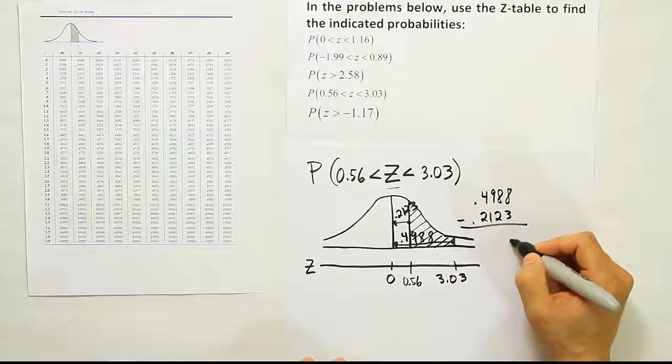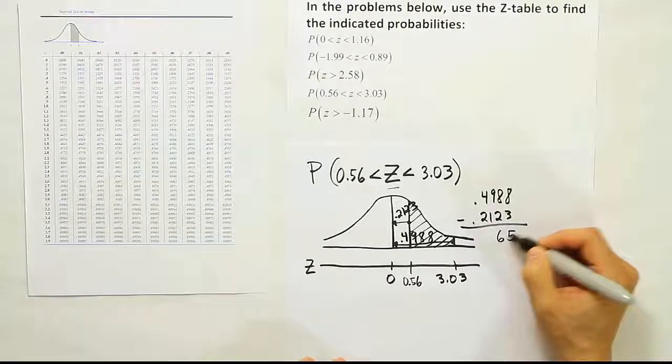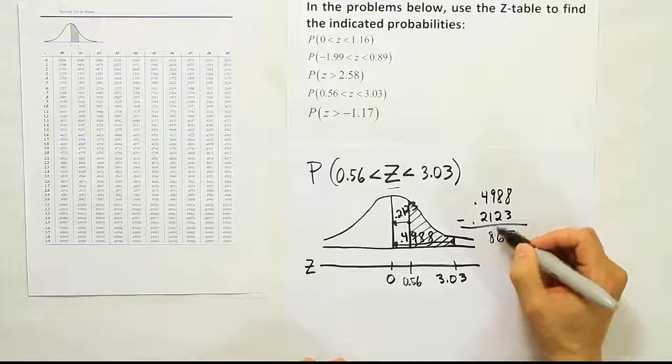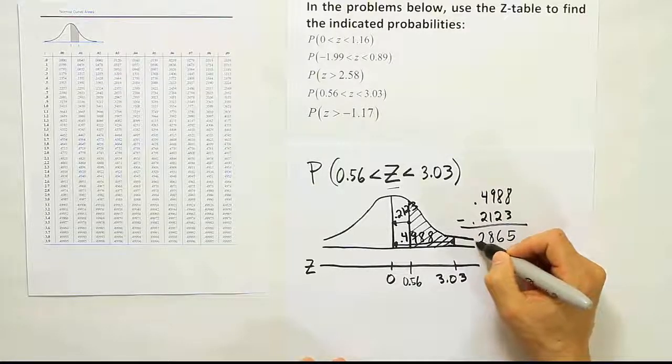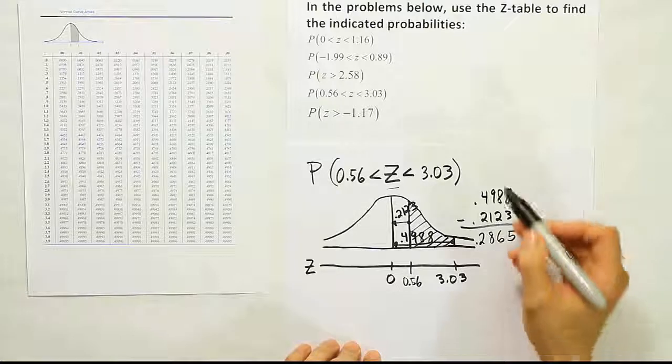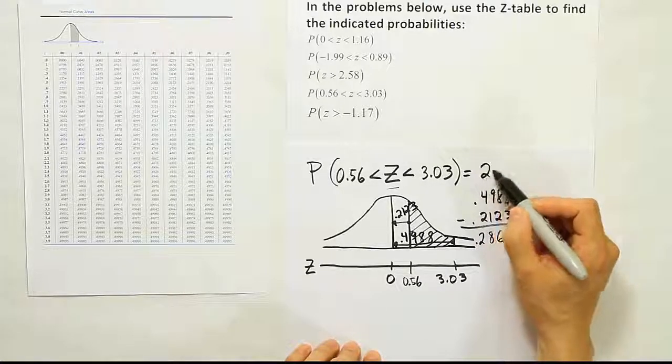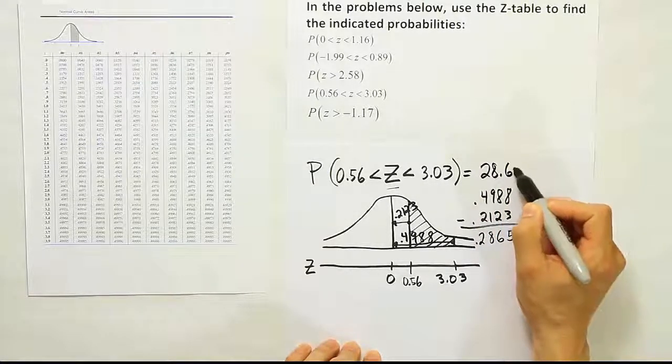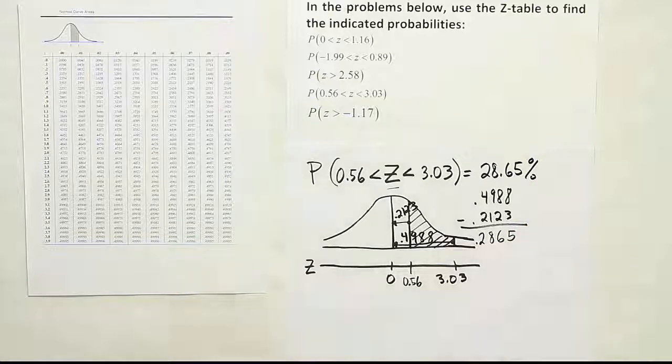So, 0.2123 will be taken away from 0.4988. So, 8 minus 3 gives me 5. 8 minus 2 gives me 6. 9 minus 1 gives me 8. And 4 take away 2 gives me 2. And my final answer, therefore, is 0.2865, or in other words, 28.65%. And that's it.